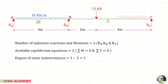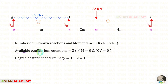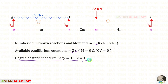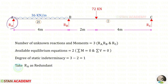Let us find the degree of static indeterminacy. The number of unknown reactions are 3: the vertical reactions RA, RB, and RC. The available equilibrium equations are 2. Therefore the degree of static indeterminacy is 3 minus 2, which equals 1. Let us keep RA as the redundant.